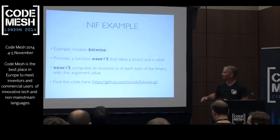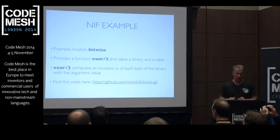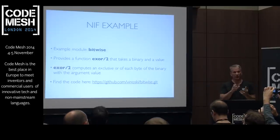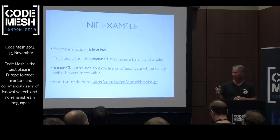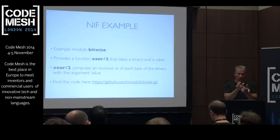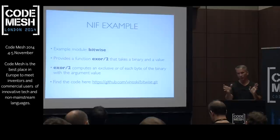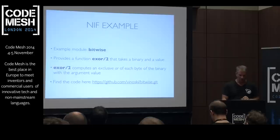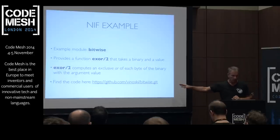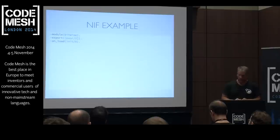For an example of a NIF, you can clone this repo called Bitwise. Basically, there's one function in there — you can imagine having a bunch of functions for operating on bytes. Bitwise has one function: exclusive OR. It takes a binary, which is just a big memory buffer in Erlang, and a value, which is a byte, and it XORs that byte into every byte of the binary and returns a new binary. These slides are also in that repo if you want to follow along.